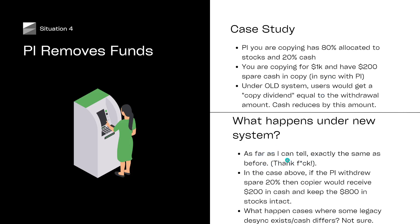As far as I can tell, this is now the same as before — if the PI takes out the spare money, you simply get that money back. If some desync exists, say the PI has 20% in cash and you've only got 10% in cash, and they take 20% out — you don't have 20% to take out. Whether some stocks are sold to make up the right amount, I don't have the foggiest idea. But suffice to say, I think this is the least complicated situation. PIs very rarely withdraw money anyway because if they withdraw money that reduces their AUM, which reduces their salary or their chance of reaching the higher tier. So I wouldn't worry too much about scenario four.